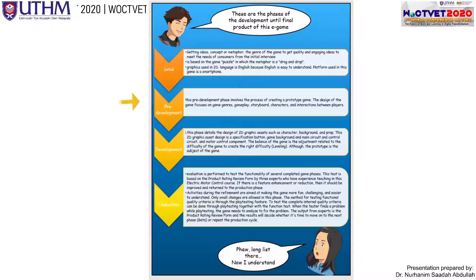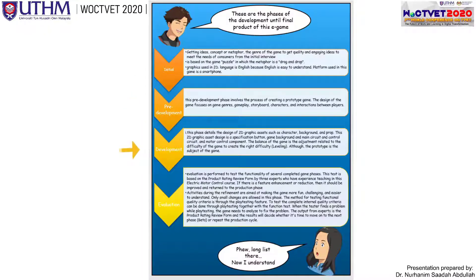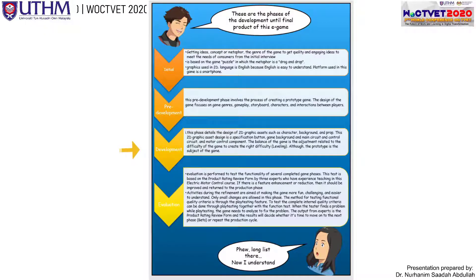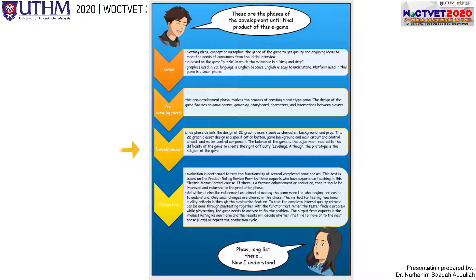In the pre-development part, we focused on the storyboard — the design of how the game can be played, and all the characters and interactions between players. In the development part, we used 2D graphics assets such as characters, backgrounds, and props. The 2D graphic asset design specifications include buttons, game background, main circuit, control circuit, and control components. We also used these to create levels of difficulty, from easy to difficult.